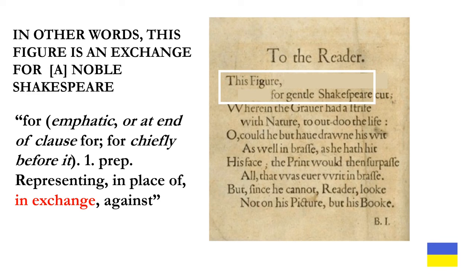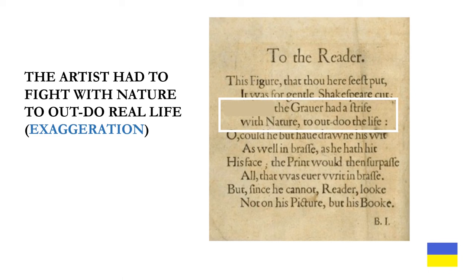In fact, we can substitute 'gentle' for the word 'that' — as in, 'this figure for that Shakespeare.' This for that is proper grammar. He explains that the artist had to fight with nature to outdo real life, as it is exaggeration: 'the graver had a strife with nature to outdo the life.' Nothing could be simpler than saying: he is exaggerating what the real writer was like.